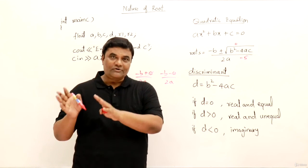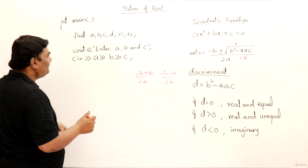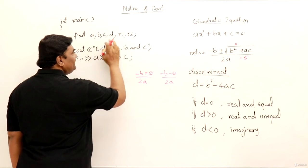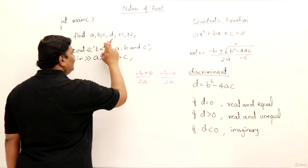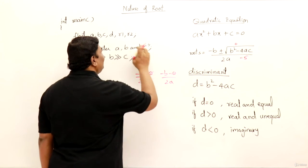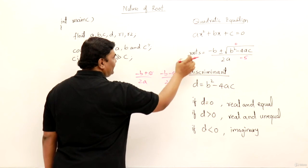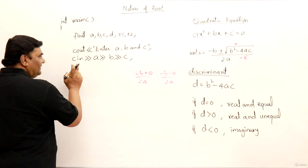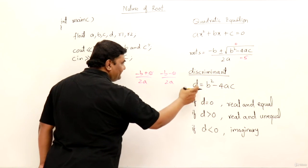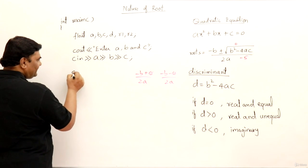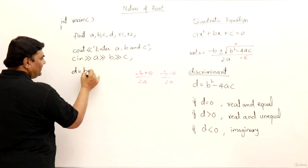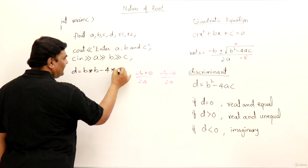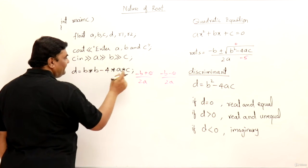So here inside the program, I have variables for a, b, c, d and roots also. a, b, c for the coefficients of this quadratic equation and d is for discriminant. And root 1 and root 2 for finding two roots. Now already I have taken a, b, c, 3 values. Then here first of all I should find out the discriminant. So let us find out discriminant. d is assigned with b square, that is b into b, minus 4ac, that is 4 into a into c. We got the discriminant.